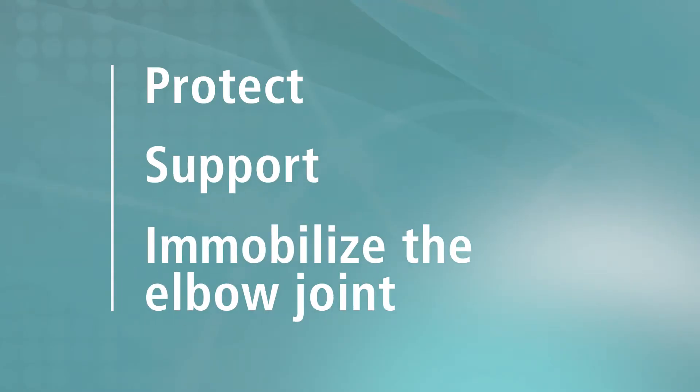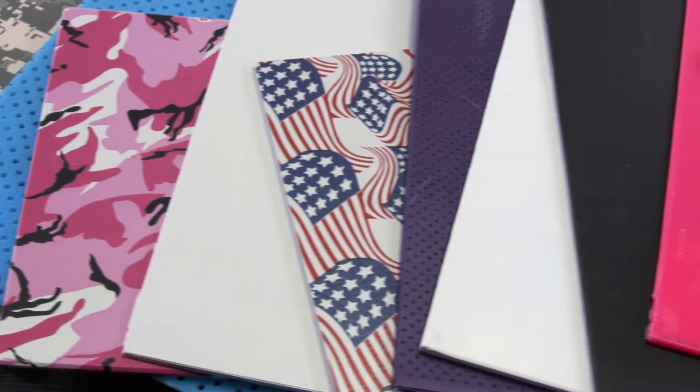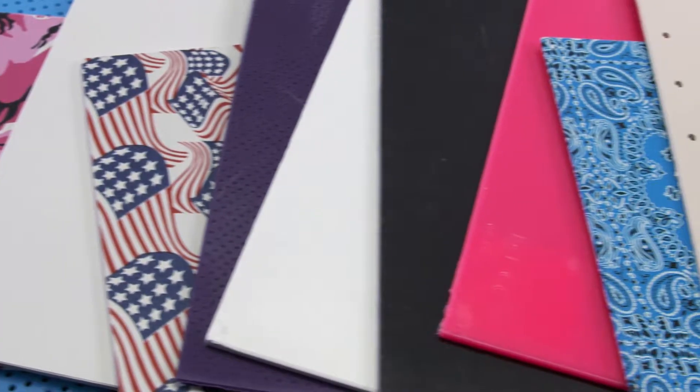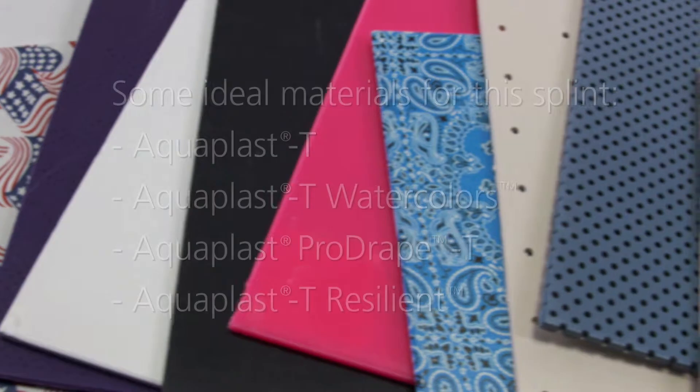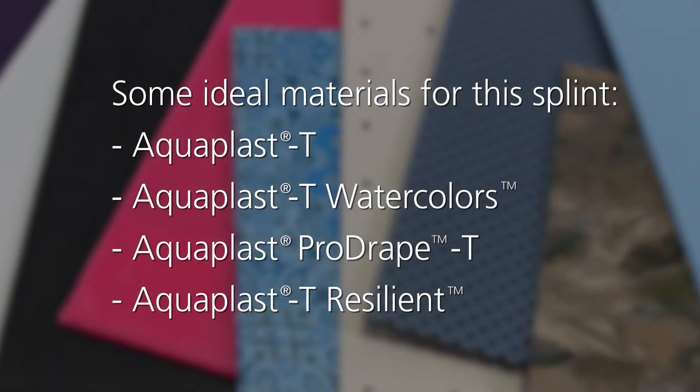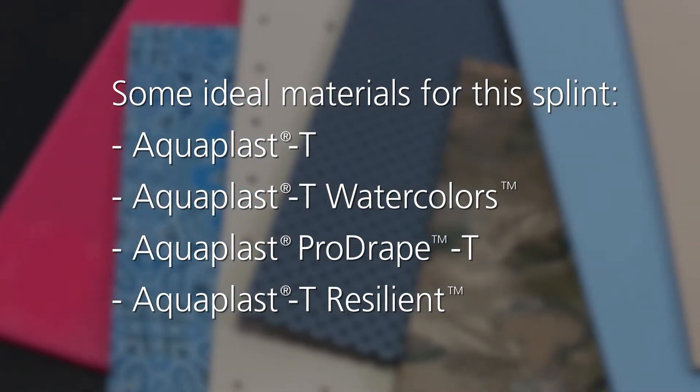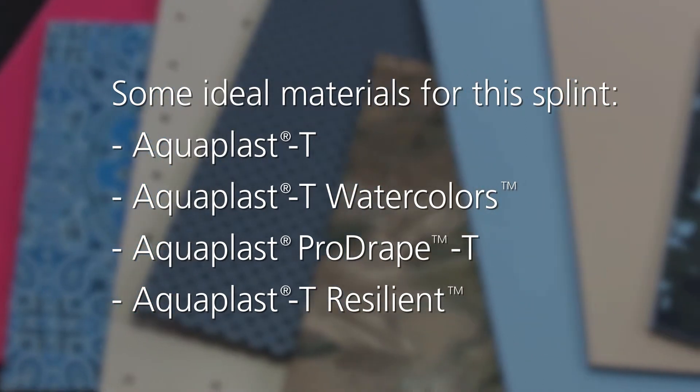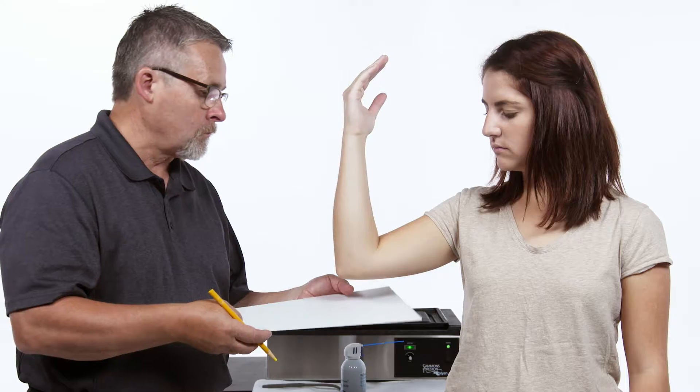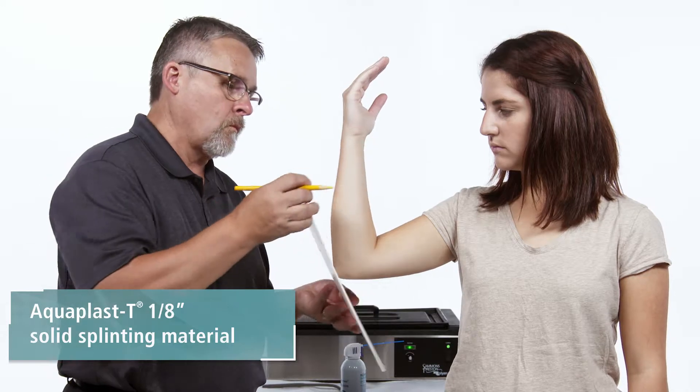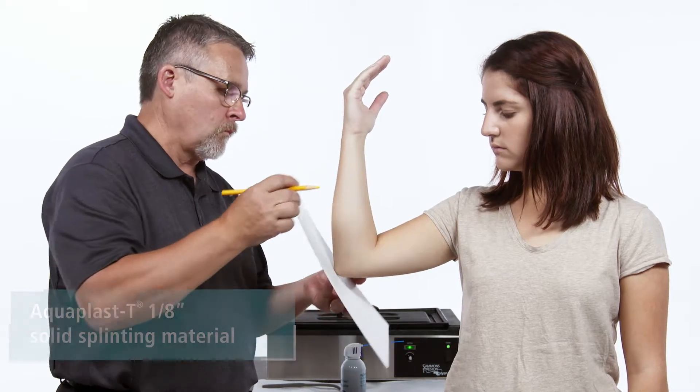This orthotic is used to protect, support and or immobilize the elbow joint. Rolion has a material for every splint, every therapist and every experience level. This demonstration will be showing the stretch and pinch technique which works best with materials from the aquaplast family. Today we will be using 1 eighth inch aquaplast T solid splinting material.